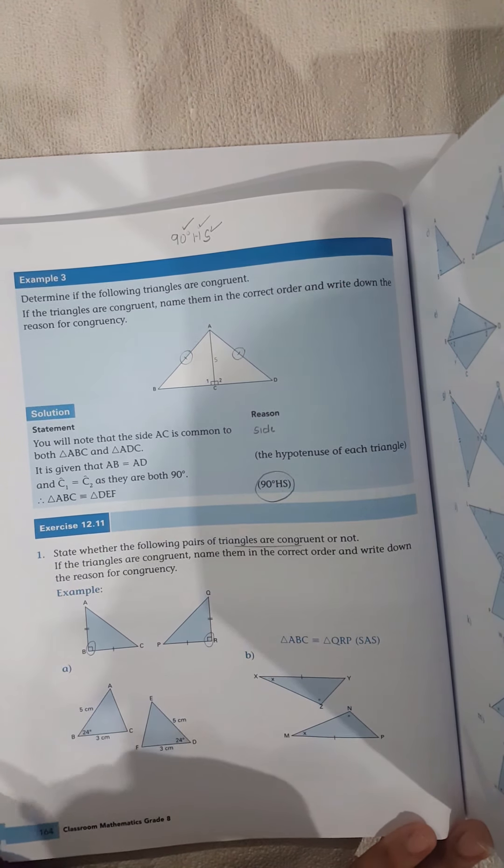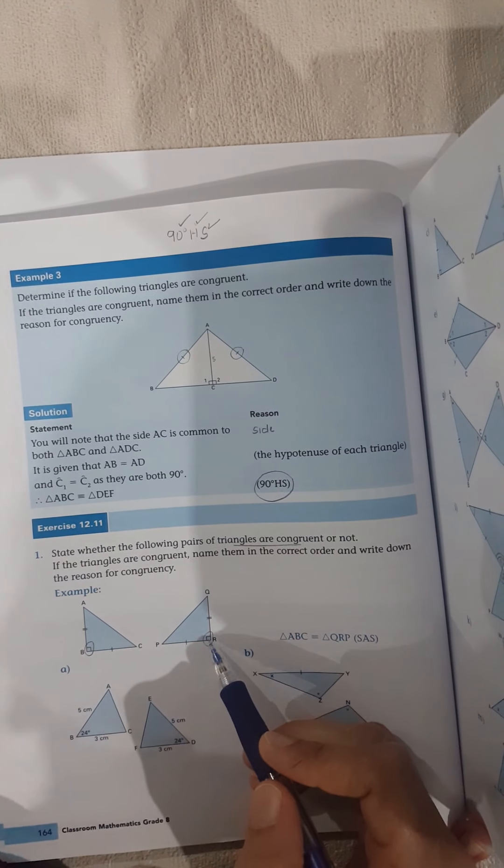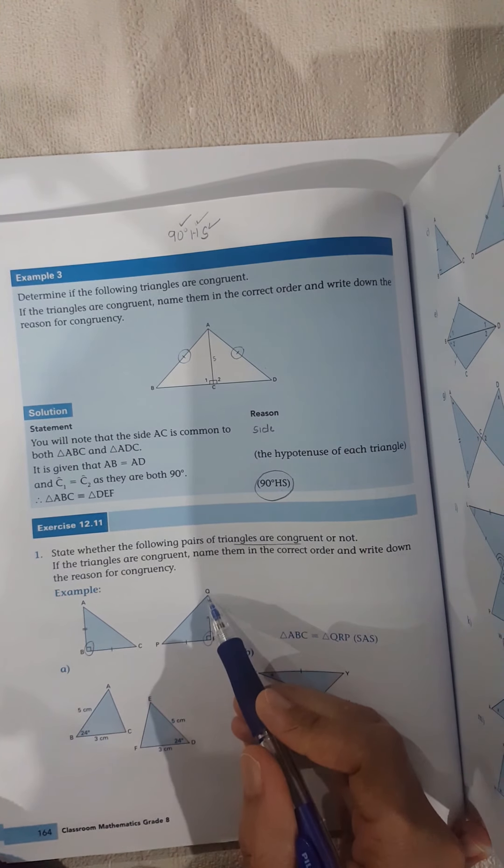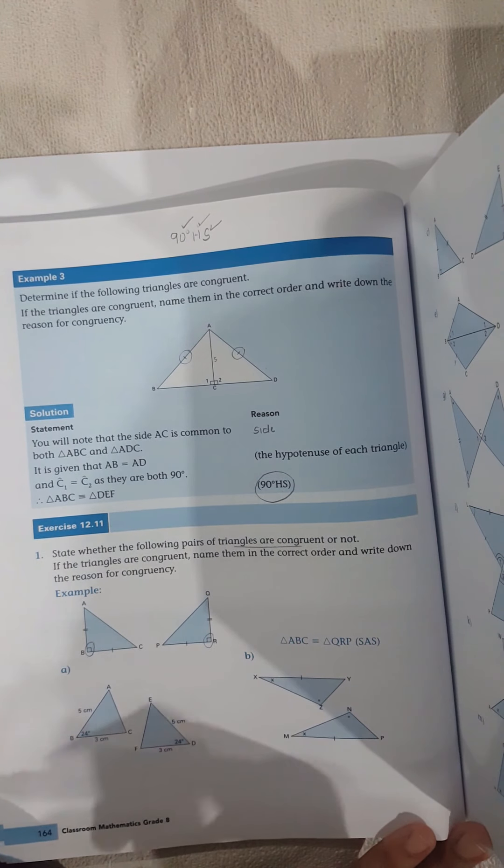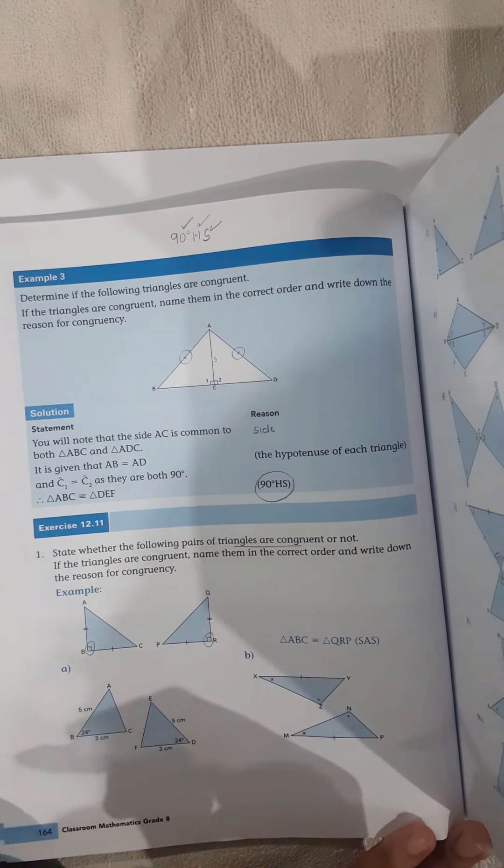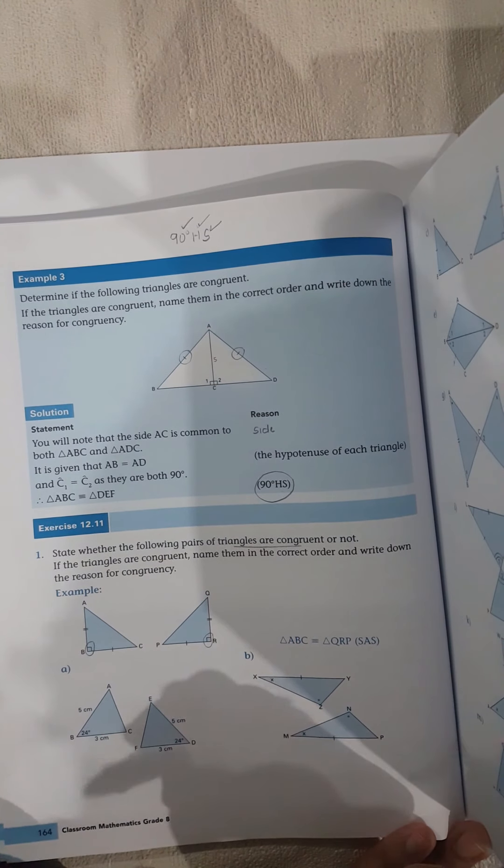Now let's look at the hypotenuse in this one here. Which one is the hypotenuse? PQ and AC. Are they equal in this example? No. So I can't prove 90 degrees hypotenuse side. That one is out for me for this one here. But let's look further.